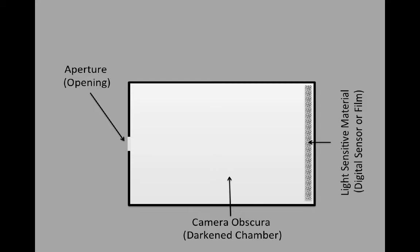Now because we're using light-sensitive material, we've got a problem: light is entering the camera obscura but we're not able to stop that light from continually exposing the image. So we need a simple device to open and close that camera obscura — open it when we want to take a photograph and close it when we don't. A mechanical device that opens and closes the camera obscura opening is called a shutter, and that shutter is just like a window shutter: close the shutters and it doesn't let light in; open them and it lets light into the room.